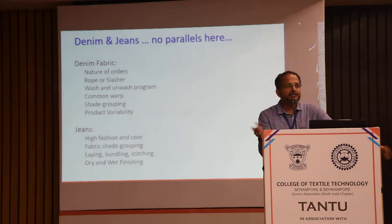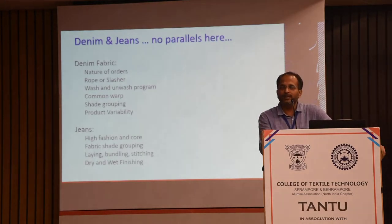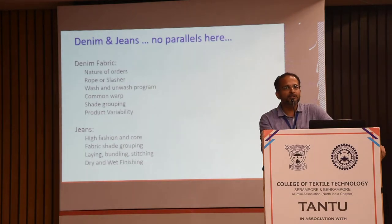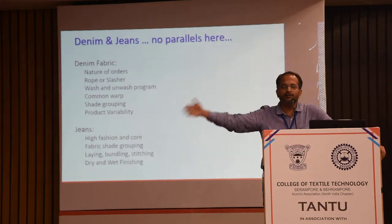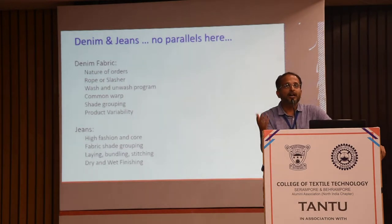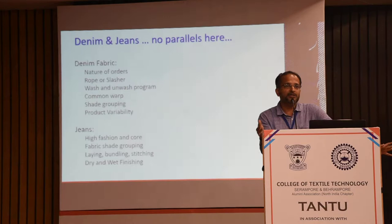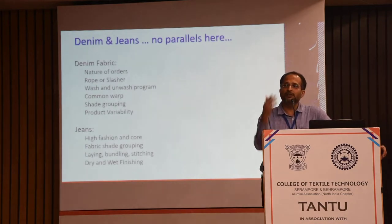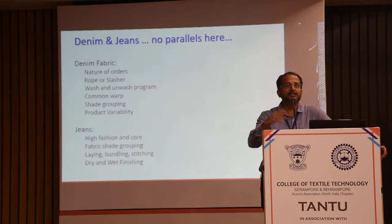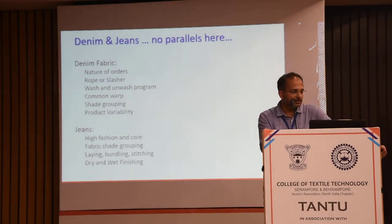Within textiles, denim has no parallels — it is very unique in its own way. The nature of orders: we were talking about rope, the kind of lengths we have — we can't produce less than 8,000 — we start with one lot, have a medium, and then a tail, which is very different from other textile processes. The rope slasher is another example; for shorter lengths we use slashers. We have wash programs that are again very different from normal textiles. We have common warps in denim — same warp with different wefts — where the same input material creates multiple output materials with different costs and different deliveries.